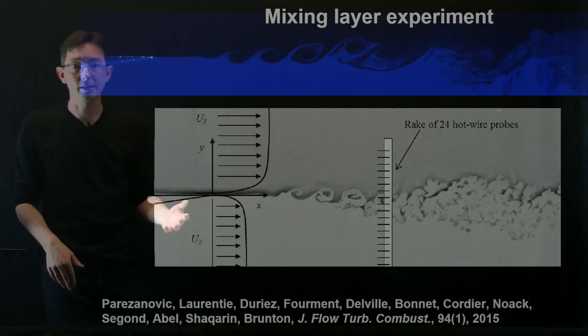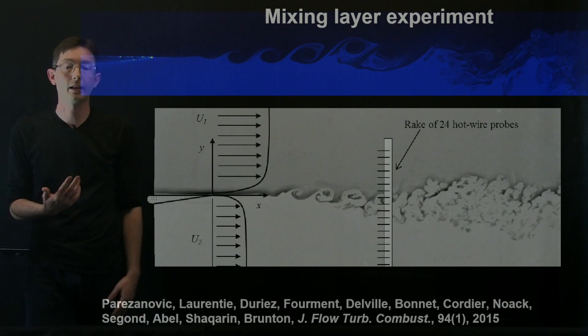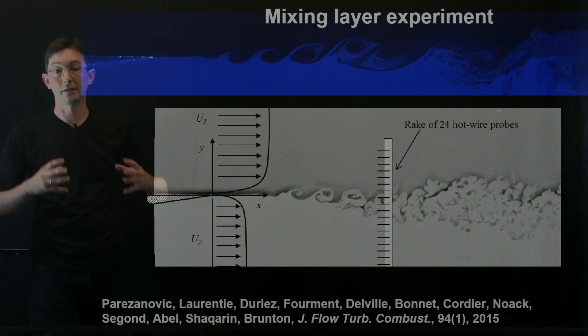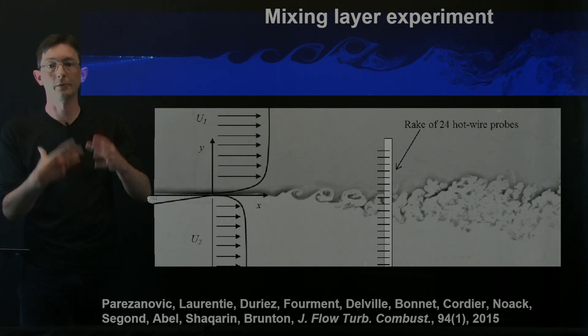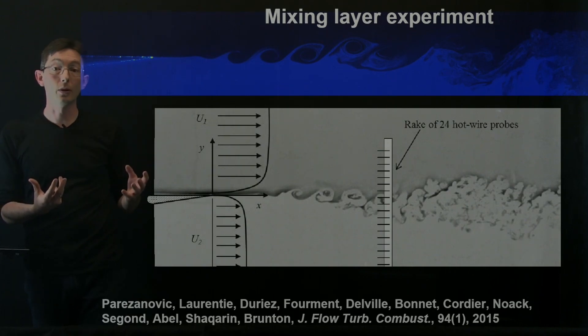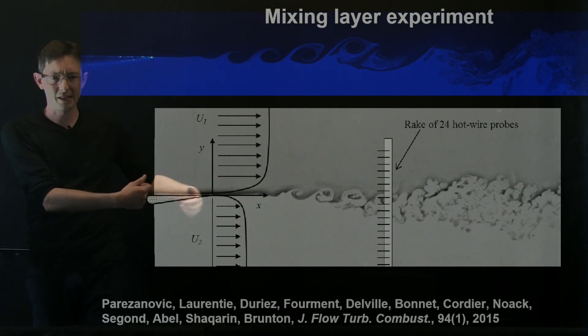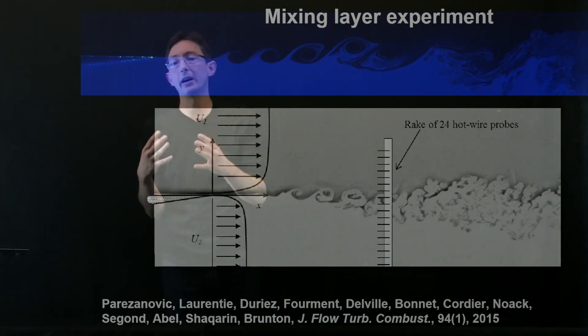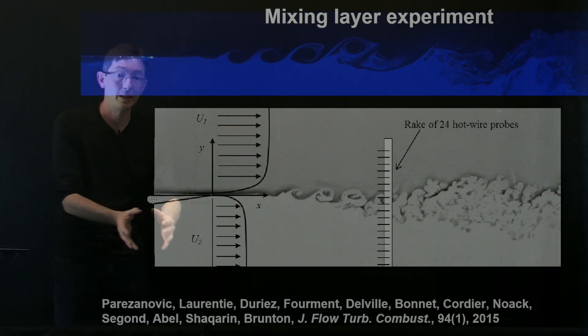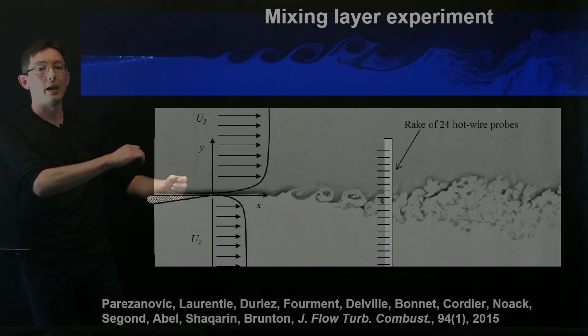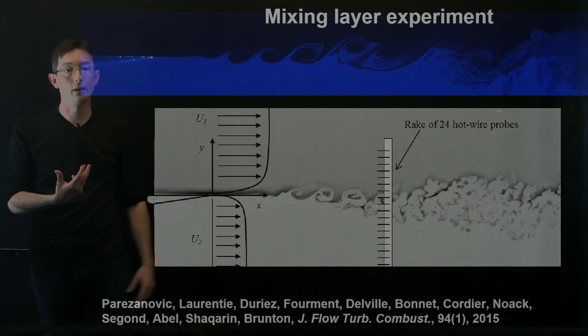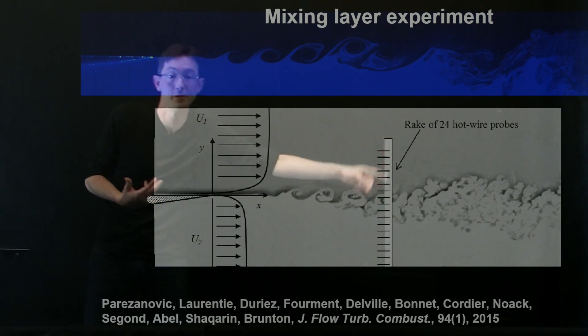Another example we've applied this to, this was an experiment run by Bernt Nowak in Poitiers, France, and Vladimir Perezanovich and collaborators designed the control laws and ran all of the experiments of this. And essentially what we did was we applied extremum seeking control to try to increase or decrease the mixing in a fluid mixing layer. So what we had here, there's the splitter plate and above the splitter plate, there's high speed flow and below the splitter plate, there's low speed flow. And what you get are these Kelvin Helmholtz instability and vortex rollup, which eventually break down at this downstream location where we can measure the flow.